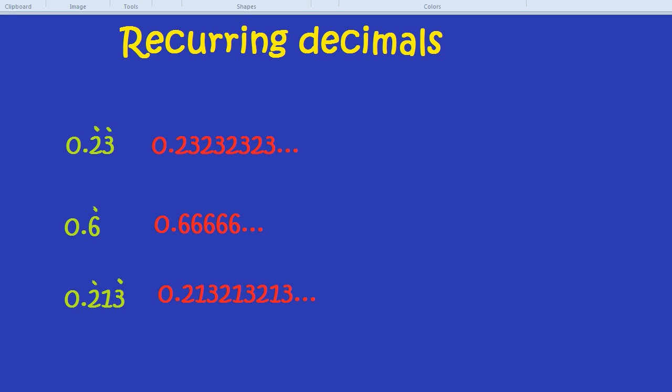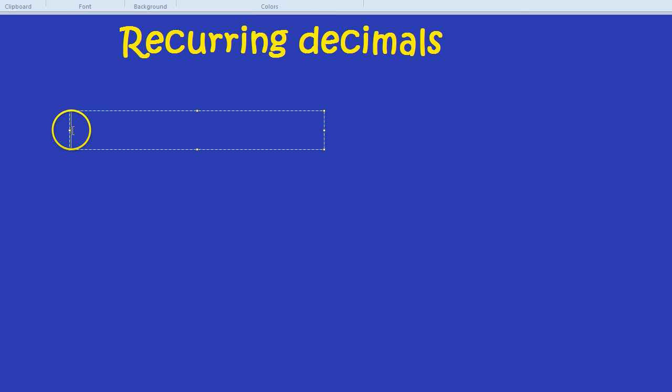The main challenge with recurring decimals is to convert them into fractions. So let's try that with a new number. How about if we had 0.21 recurring? And we can tell it is recurring because there would be a dot above the 2 and the 1.